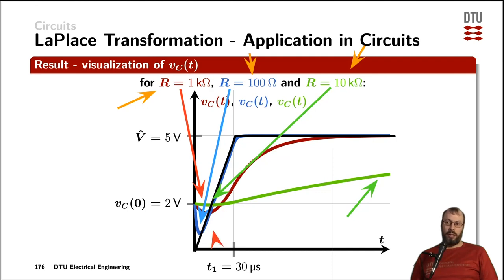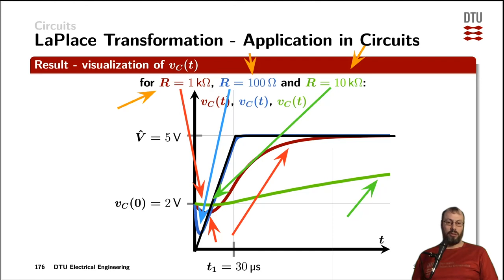The 1 kΩ resistor, represented by the red graph, is somewhere in between. The capacitor voltage takes a dip as the source voltage is initially lower than the initial capacitor voltage, but then it rather quickly charges all the way up and follows the source voltage until it converges at the end to the same 5 volts that the source voltage is providing.